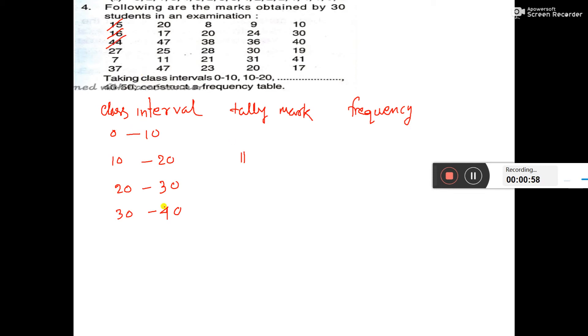44, so here we have to write one extra class interval, 40 to 50. I cut 44, so 1 tally mark here. Then 47, it is also here.